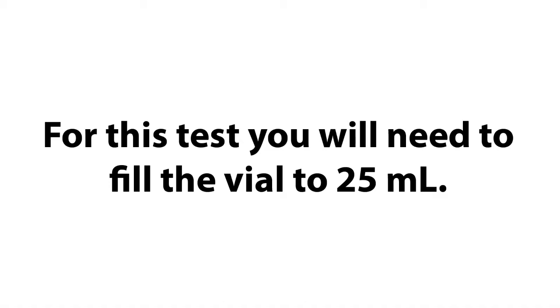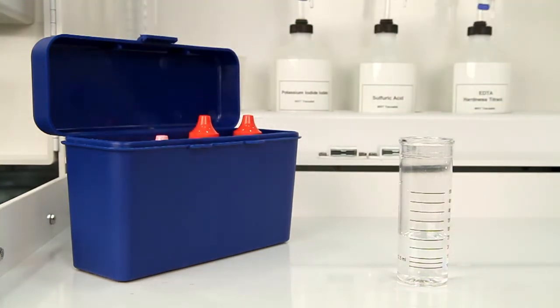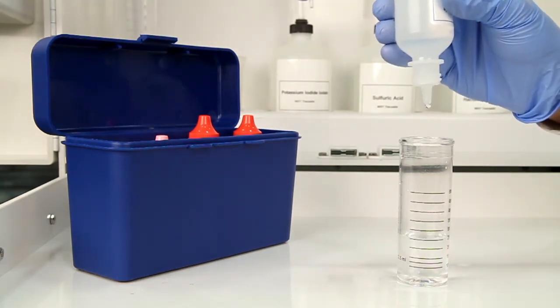Once you've collected an accurate sample, the next step is to add 20 drops of barium chloride 20%. The bottle contains a dropper tip, so it's important to hold the bottle vertically to get a consistent drop size.